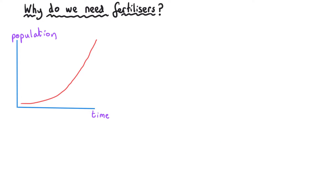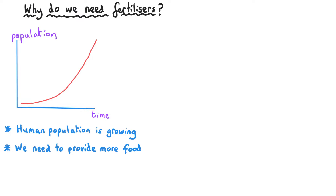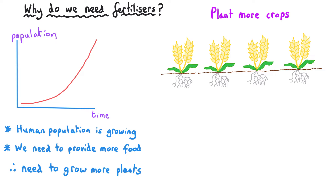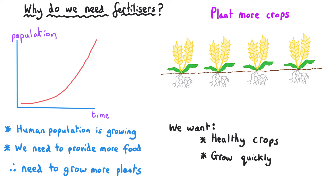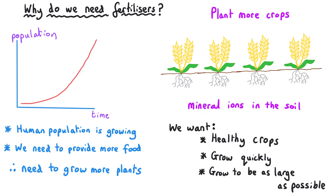The human population is growing year on year, and to support this growing population we need more food. One of the ways that we get more food is to plant more crops. We want these crops to be as healthy as they can possibly be, to grow as quickly as possible, and to grow to be as large as possible. When plants grow, they take up mineral ions from the soil through their root hair cells in the fields where they're growing.